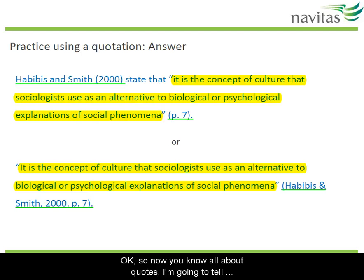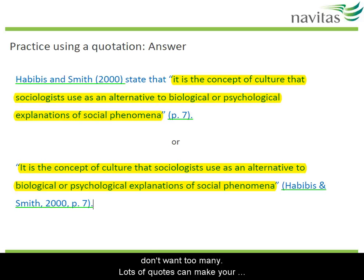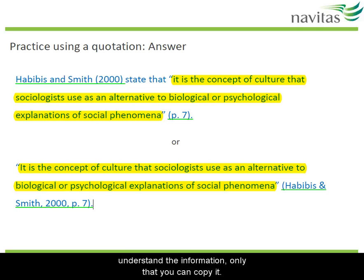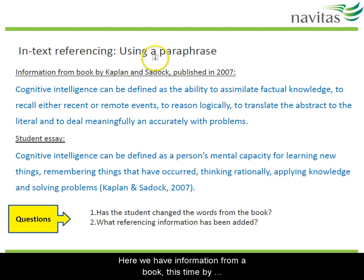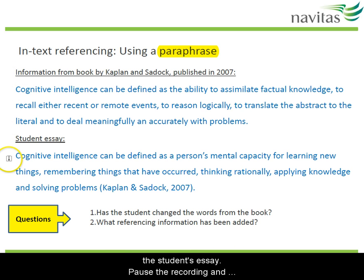Now you know all about quotes, I'm going to tell you that a few quotes in an assignment is great, but you don't want too many. Lots of quotes can make your assignment difficult to read and they don't show you understand the information, only that you can copy it. So you need to explain most of the information you get from sources in your own way and that's called paraphrasing. Here we have information from a book, this time by Kaplan and Sadek, then another segment from the student's essay. Pause the recording and think about these questions.